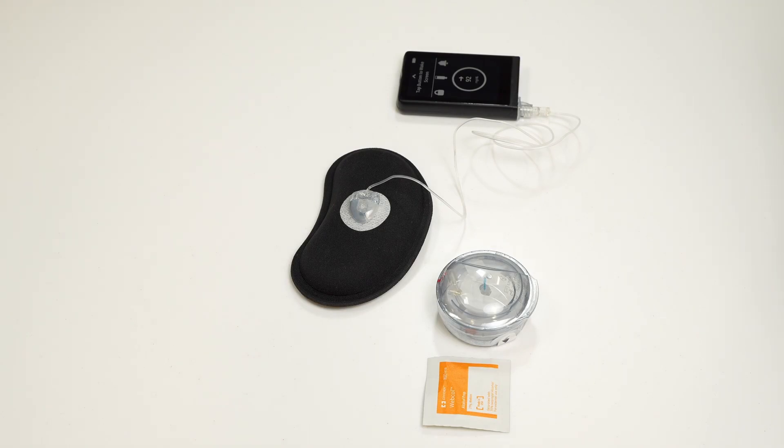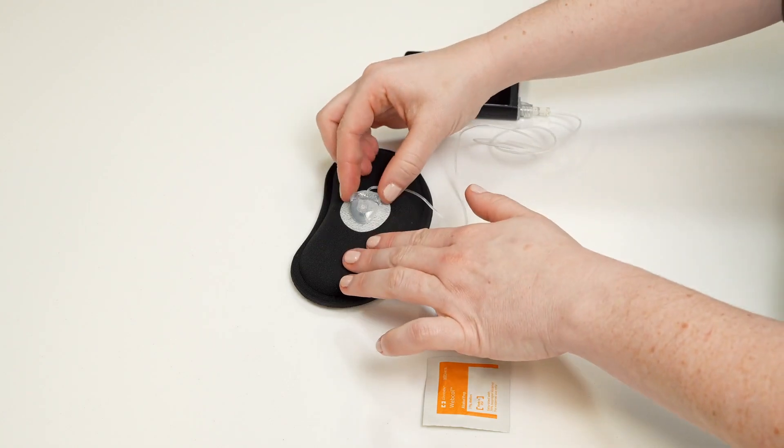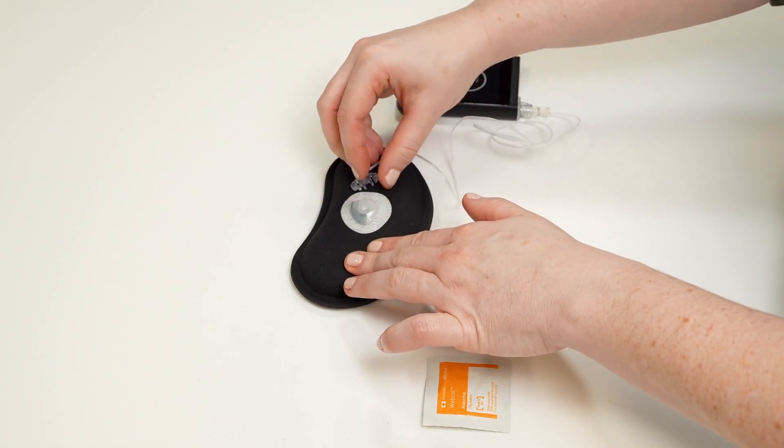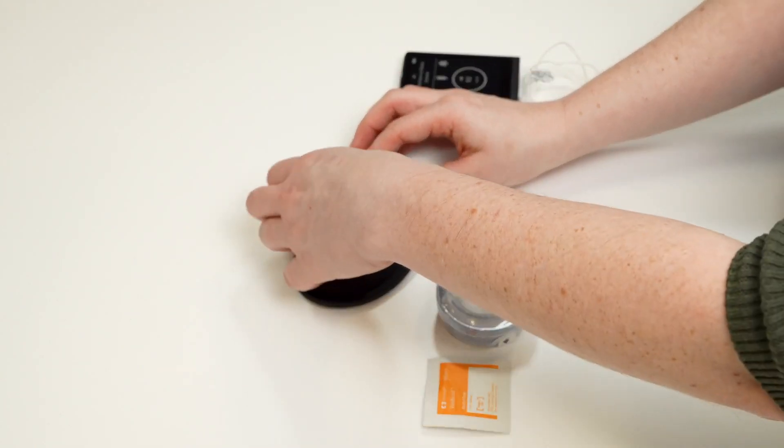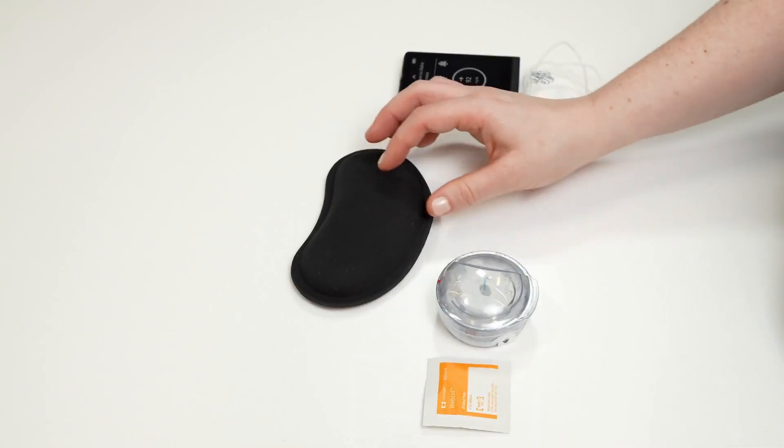First, disconnect your tubing from your infusion set base and gently peel the old infusion set off of your body. Clean your skin.